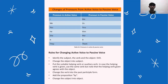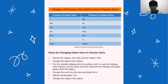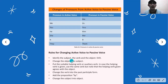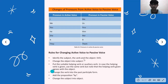Rules for changing active voice to passive voice: identify the subject — you must identify what the subject is, like 'I,' then change the pronoun to 'me.' Then change the object to the subject position — the object actually goes to the end of the sentence and the subject is moved. Put the suitable helping verb or auxiliary verb; if a helping verb is given, use the same verb but note that it agrees with the object. Change the verb into the past participle form. The preposition used is 'by.' Then change the subject into the object.